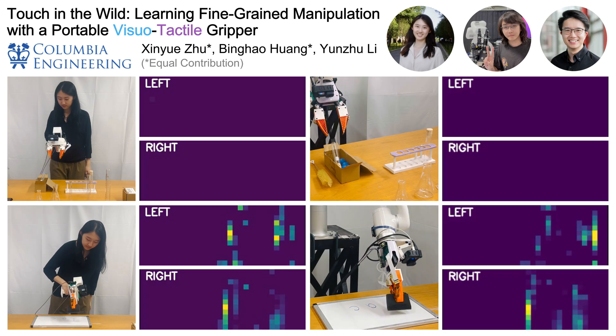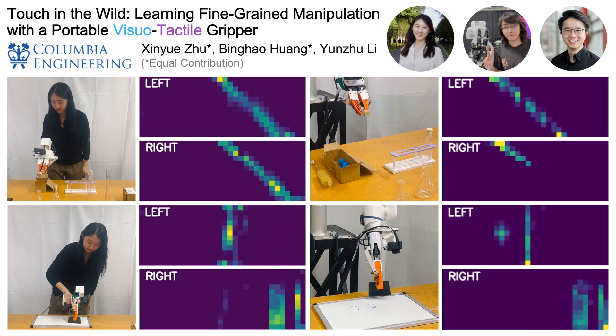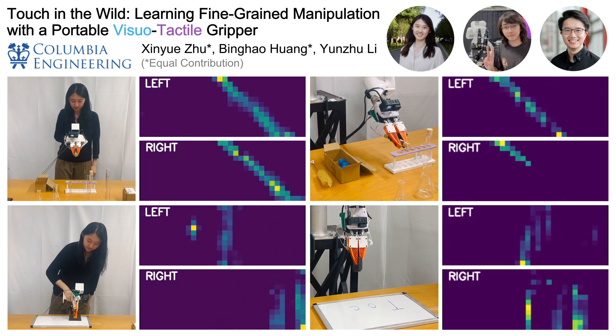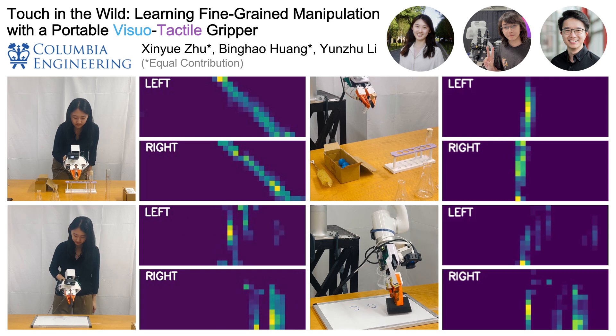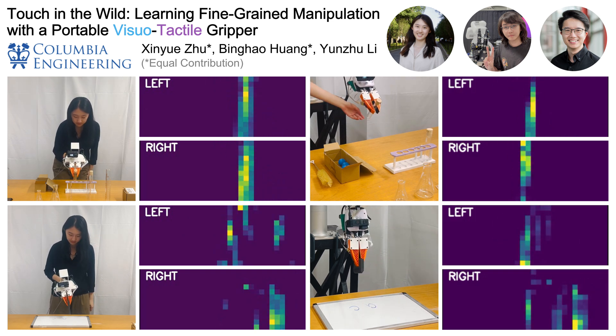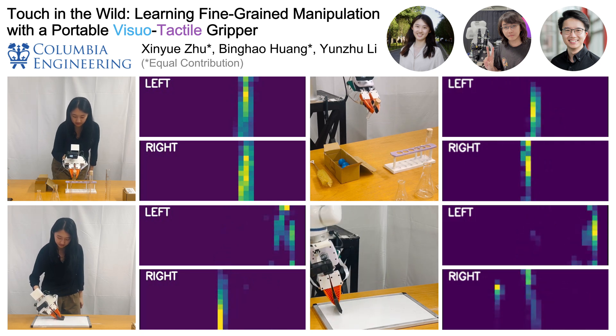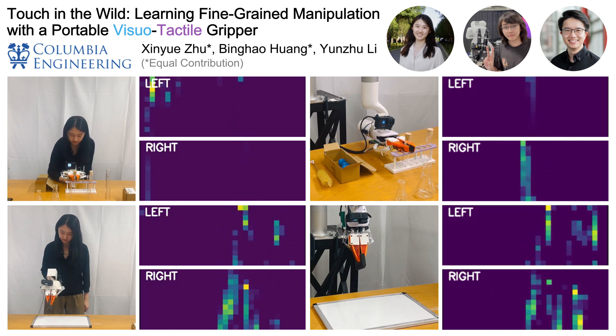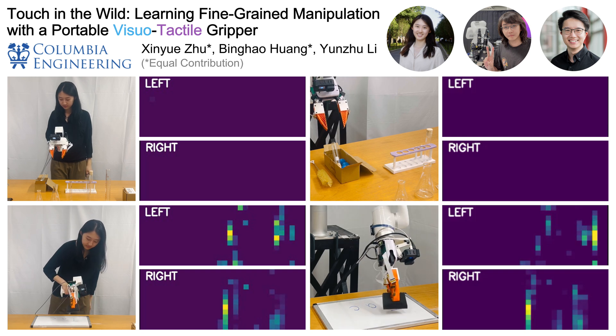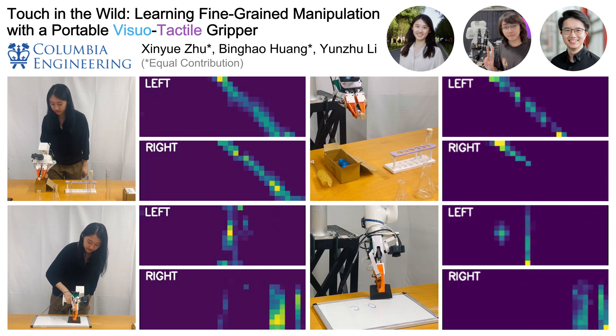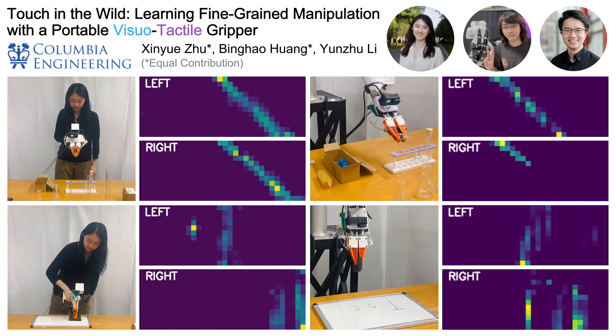In summary, our system enables scalable in-the-wild data collection and improves manipulations through joint visual tactile representation learning. Our policies with pre-training are accurate, robust, and efficient, especially in real-world conditions with uncertainty and noise. We're open sourcing our hardware and code. Please check out our project page and feel free to reach out if you have any questions. Thank you.